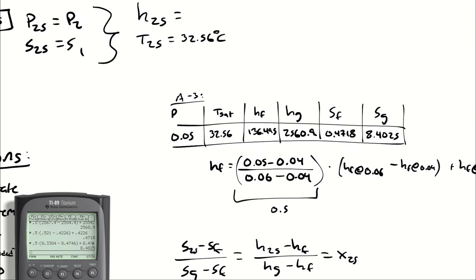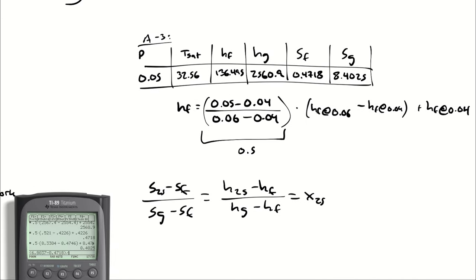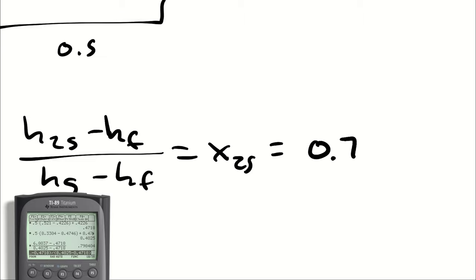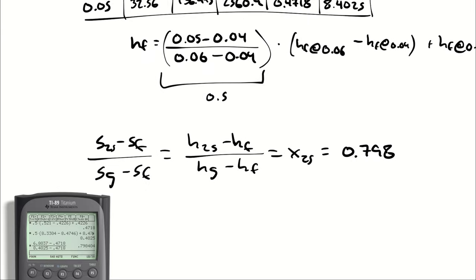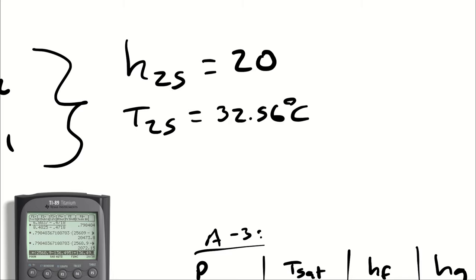That would be S2S which is 6.8037 minus 0.4718 divided by 8.4025 minus 0.4718, which gives me a quality of almost 80%. And then my interpolation for enthalpy is going to go 0.798404 times HG minus HF, which is 2560.9 minus 136.495, plus 136.495, and I get 2072.15. H2S is 2072.15 kilojoules per kilogram.